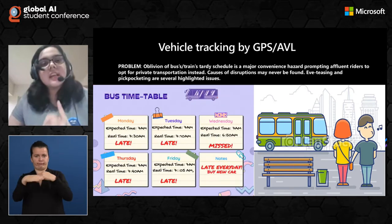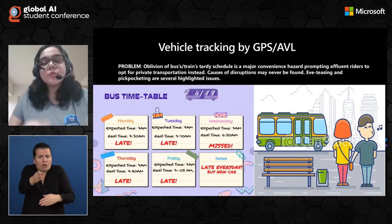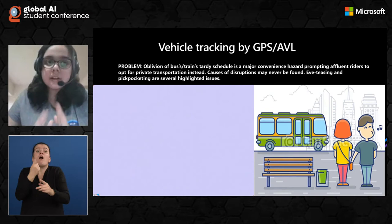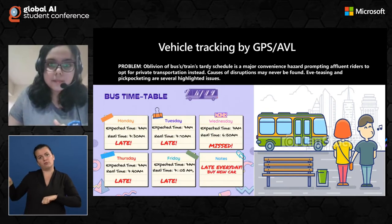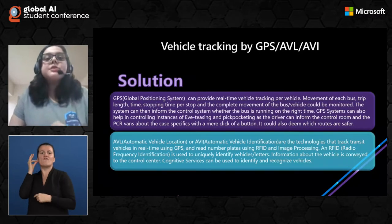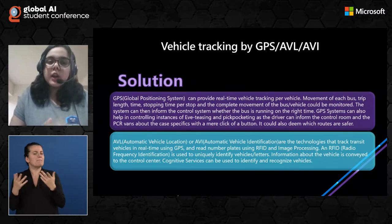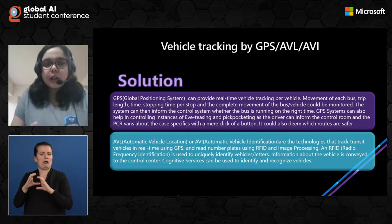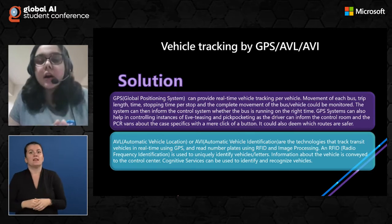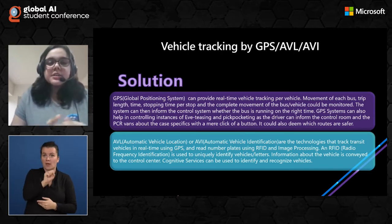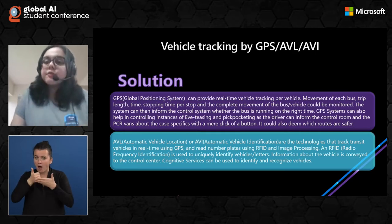Oblivion of bus or train schedules is a major convenience hazard that prompts affluent riders to opt for private transportation. The causes of disruptions may never even be found. Cases like eve-teasing and pickpocketing are several highlighted issues that increase the problems associated with public transportation systems. The solution could be vehicle tracking using GPS, AVL (Automatic Vehicle Location), and AVI (Automatic Vehicle Identification).